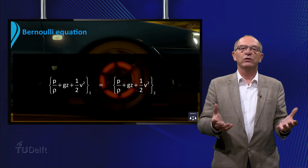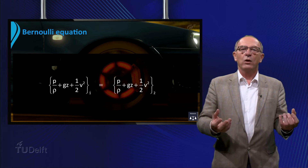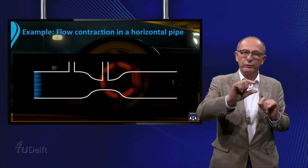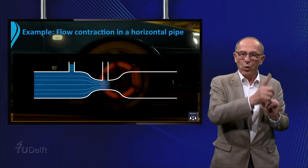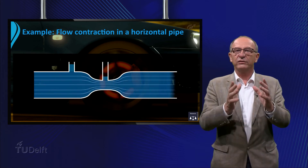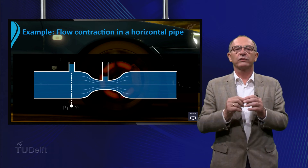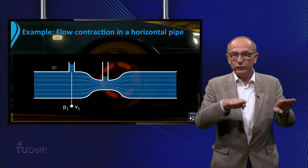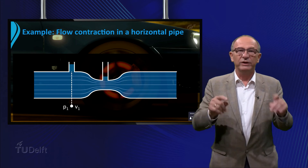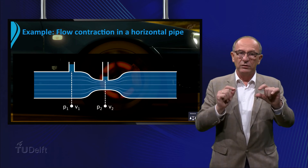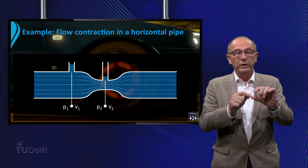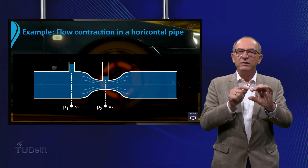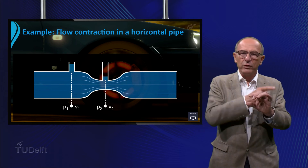Let's illustrate Bernoulli's principle with an example. Consider a horizontal pipe where a liquid flows through a contraction. At point 1 in the pipe, the local pressure is P1 and the local velocity is V1. At point 2, located in the contraction on the same horizontal plane, the pressure is P2 and the velocity is V2. The velocity V2 is much higher than before the contraction.